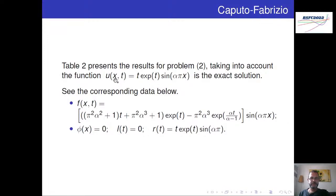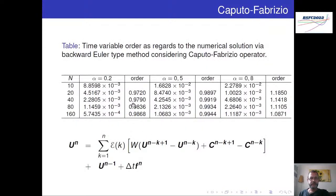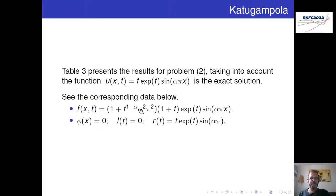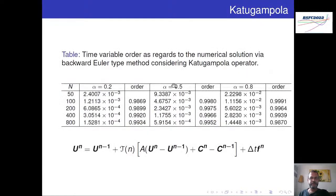Para o Caputo-Fabrizio, com a solução analítica e os dados de entrada correspondentes, os resultados também ficaram muito próximos de 1, com uma pequena diferença. E para o Katugampola, igualmente temos resultados muito próximos do método Euler regressivo clássico, sempre com a ordem calculada próxima de 1.